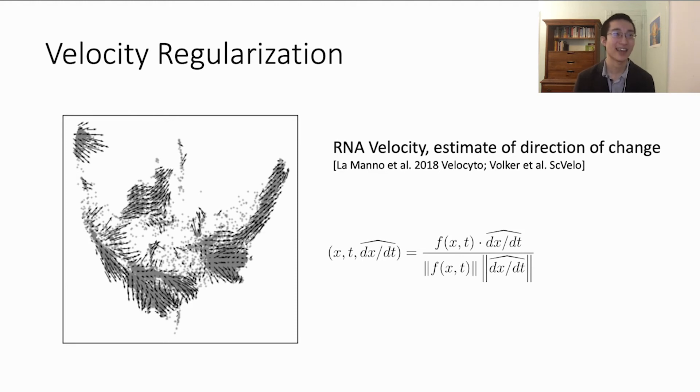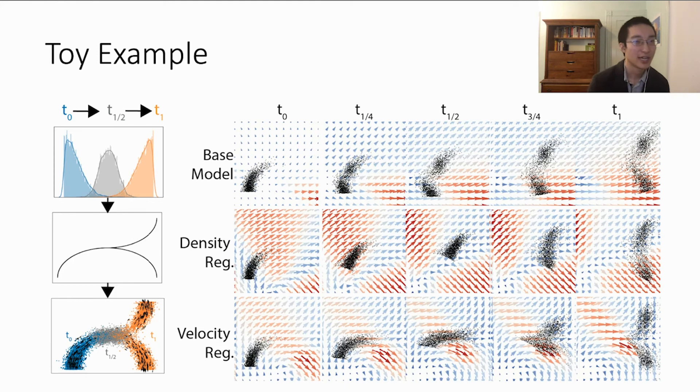So RNA velocity gives this arrow at each cell. That's generally individualized. So here we group and average the velocities. RNA velocity estimates the direction of change for each cell depicted here on this plot, but it's very noisy. So we think it gives a good estimate of direction, but so far nobody's really been able to actually calculate the magnitude very well. So we choose to penalize the cosine distance between our predicted derivative of f and the RNA velocity at all the data points. This means they match direction, but ignores the magnitude.